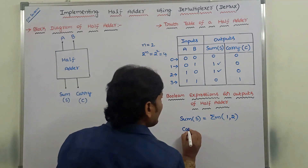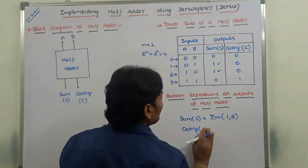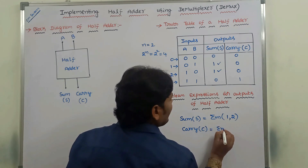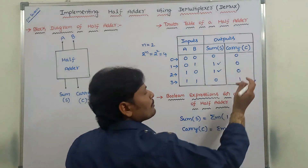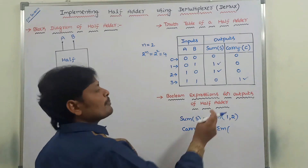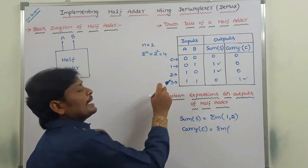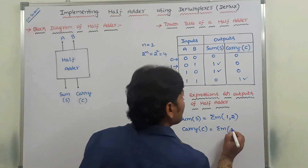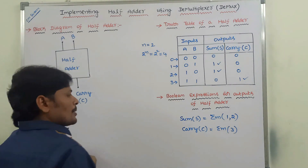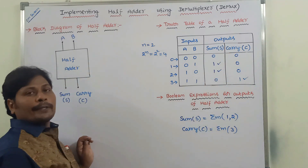Next, we find the boolean expression for carry output in terms of sum of minterms. In the carry column, the value 1 is present only for input combination 11, whose equivalent decimal or minterm value is 3. So carry output is sigma m(3). This gives us the boolean expressions for both outputs of the half adder.